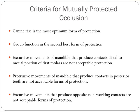Group function is the second best form of protection. Group function means the premolar, incisor, and possibly the mesiofacial cusp of the mandibular first molars are involved in guidance and movement of the mandible. Excursive movements of the mandible that produce contact distal to the mesiofacial cusp of the first mandibular molars are not acceptable protections.